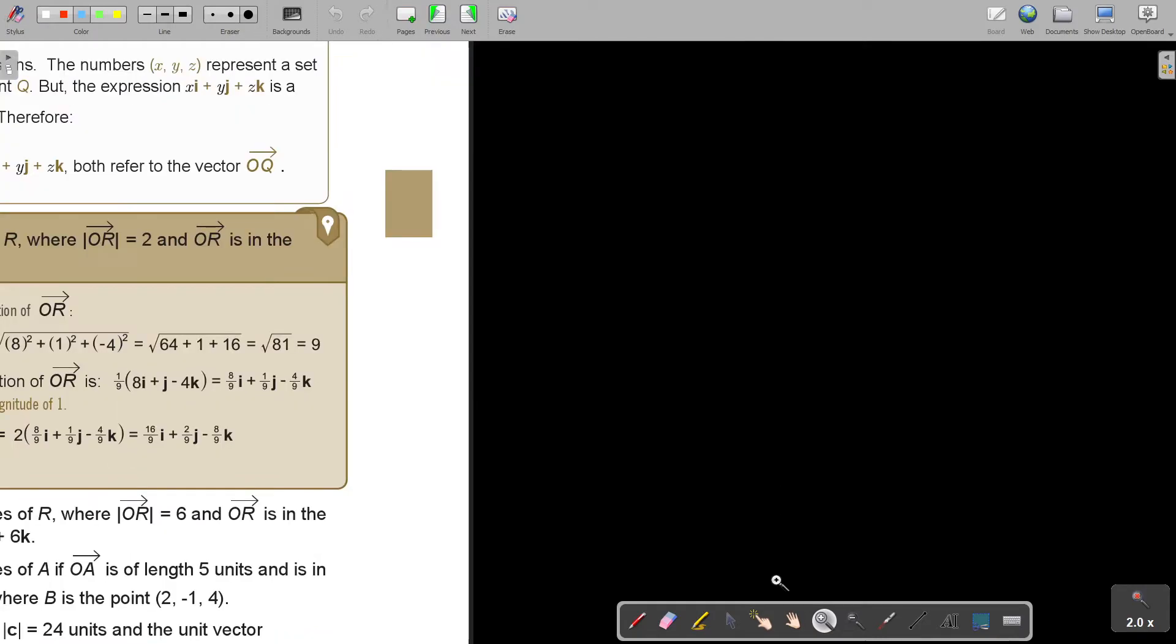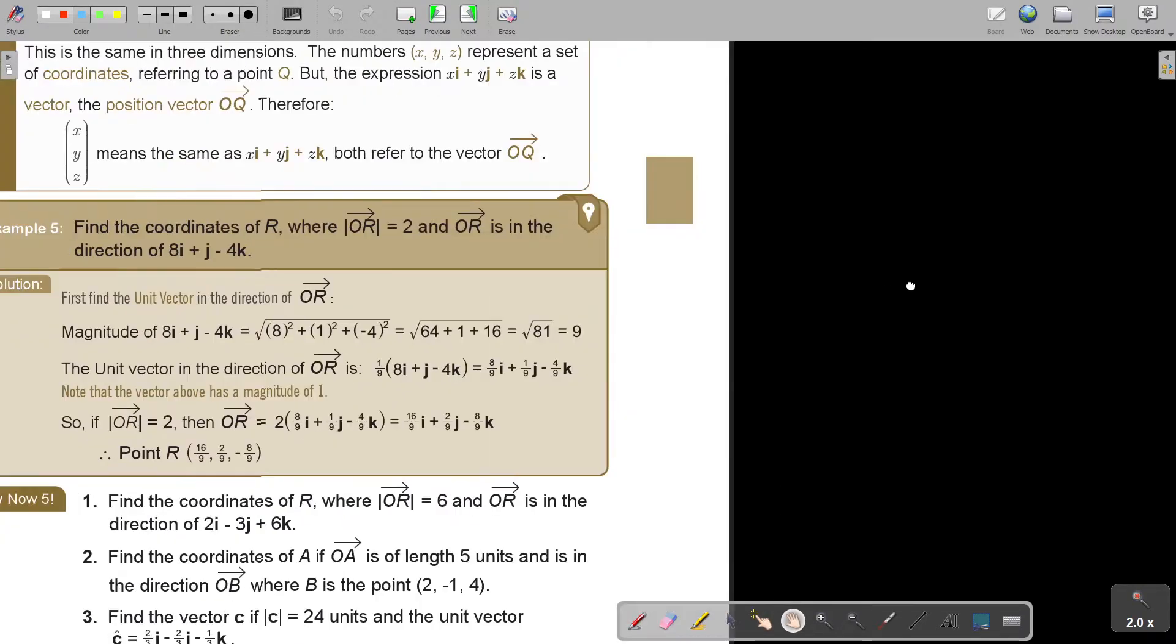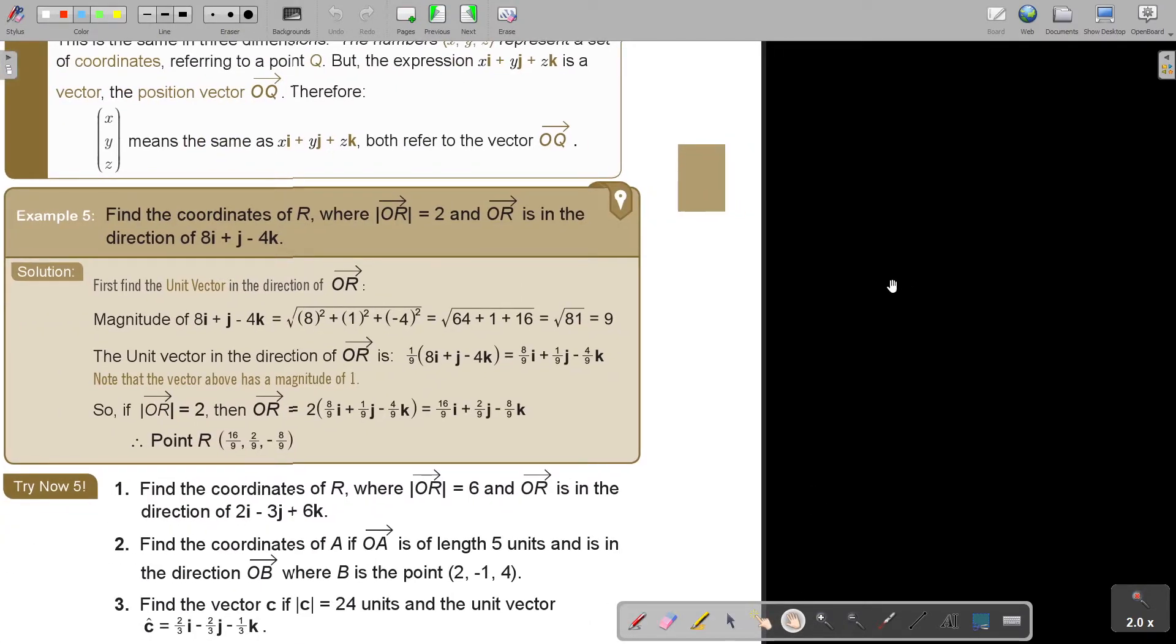Now, note that the vector above has a magnitude of 1, if you work out this magnitude. So if OR is 2, then OR is 2 times the unit vector, which will then, if you simplify this, give you this. So point R is going to be 69, 2 over 9, negative 8 over 9. And that is the way that we are going to do it.